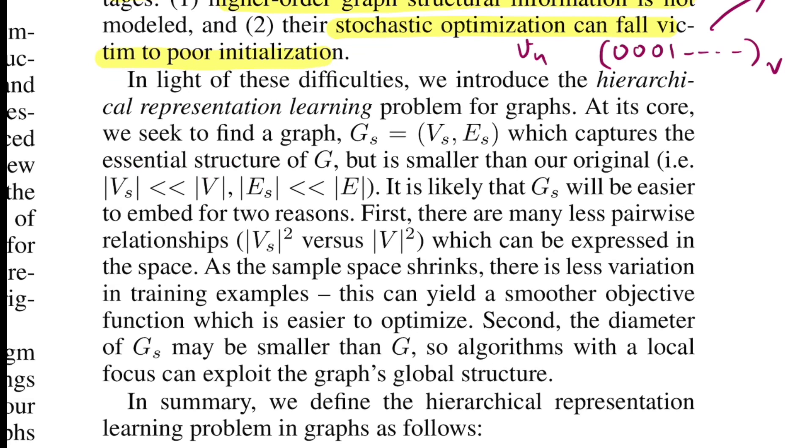The aim of the method the authors propose is to find a graph GS which has VS number of vertices and ES number of edges, where the count of VS is much smaller than the count of the original number of vertices in graph G, and similarly for edges. Because of this, you'll have less pairwise relationships, resulting in lesser complexity, resulting in a smoother objective function that would be easier for the optimizer to optimize on.